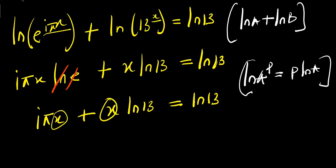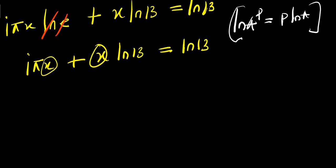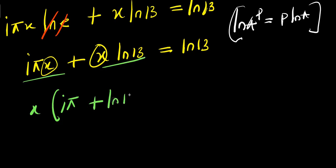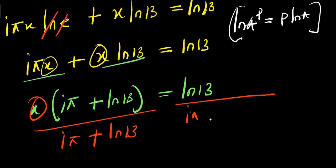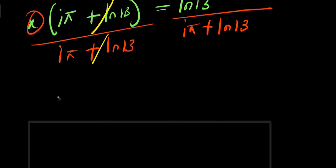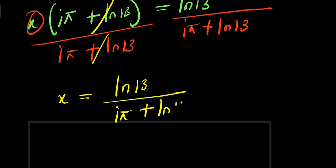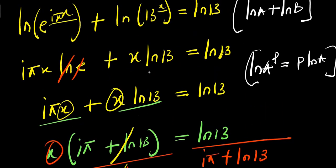There is x here and x here, so I can factor that out. I have x times the quantity i times pi plus natural log 13, equals natural log 13. To isolate x, divide both sides by i times pi plus natural log 13. This cancels, so x equals natural log 13 divided by i times pi plus natural log 13.